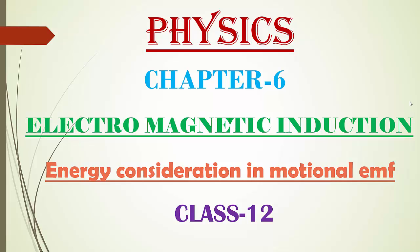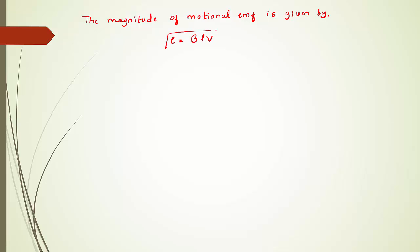Now let us study about energy consideration in motional EMF. The magnitude of motional EMF, which we derived in the previous class, is given by the equation e = Blv. We will take this as equation number one.